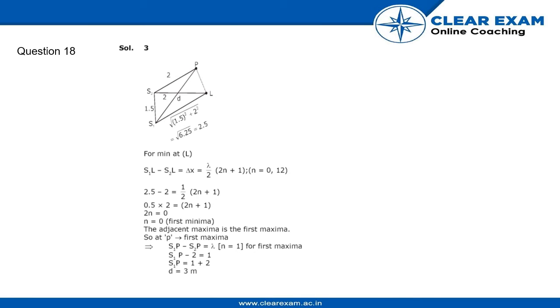For minimum at L, we have this figure. From the graph we connect the points to get a parallelogram. For minimum at L, we get S1L minus S2L equals delta x equals lambda by 2 times (2n + 1), where n equals 0, 1, 2.